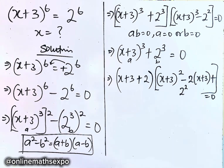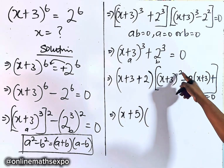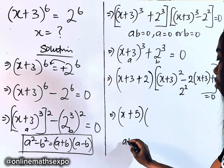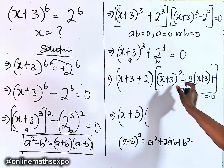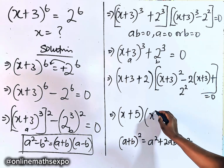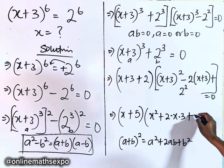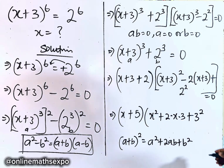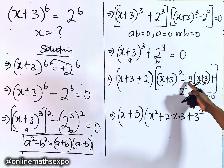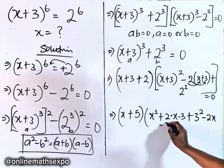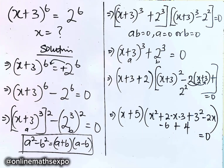We now have (x + 5) into the expanded expression. To open up (x + 3)², we use (a + b)² = a² + 2ab + b², giving us x² + 2·x·3 + 3², which is x² + 6x + 9. Then we distribute the −2 inside the bracket, getting −2x − 6. And 2² gives us +4. Everything is equal to 0.